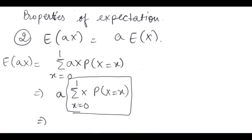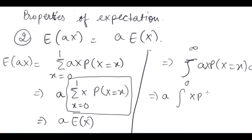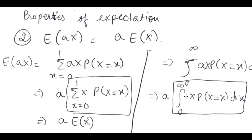In the continuous case, we do the same: E(aX) equals the integral of a times x times f(x) dx from 0 to infinity. A is brought out of the integral, leaving a times the integral of x times f(x) dx, which is a times E(X). So here we see that E(aX) = a·E(X) holds for both discrete and continuous cases.